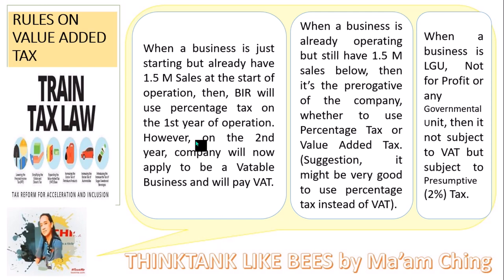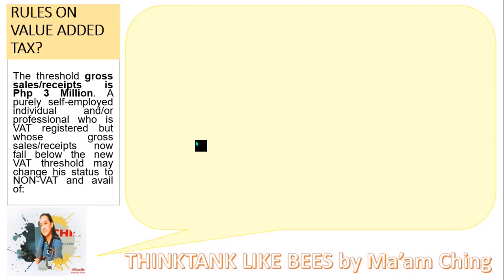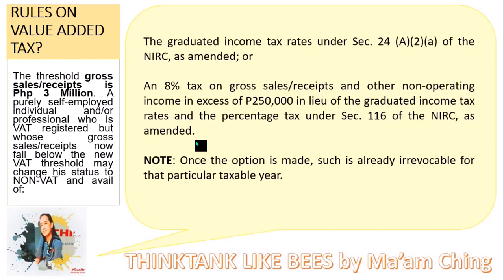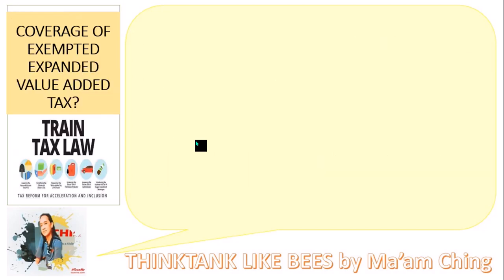When a business is an LGU, non-profit, or any governmental unit, it is not subject to value-added tax but subject to a presumptive 2% tax. The threshold for gross sales or receipts is 3 million. A purely self-employed individual or professional who is VAT-registered but whose gross sales or receipts fall below the VAT threshold of 3 million may change status to non-VAT and avail of the graduated income tax rate under Section 24(A)(2)(a) of the NIRC as amended, or an 8% tax on gross sales or receipts and other non-operating income in excess of 250,000, in lieu of the graduated income tax rate and the percentage tax under Section 116 of the NIRC as amended. Note: once the option is made, it is already irrevocable for that particular taxable year.